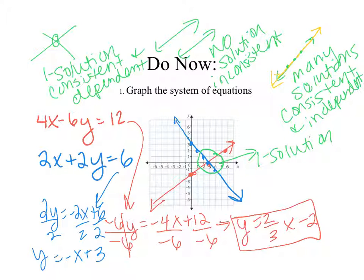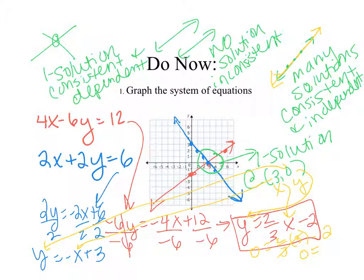And it looks like they cross at 3 comma 0. The way to confirm this is to plug in, and if both make true statements, then you can confirm yes solution. So if I go to check and I plug in 3 for x and 0 for y in both equations, I will get true statements. So 0 equals 2 thirds times 3 minus 2. So 0 does equal 2 minus 2 or 0. Check. 0 equals negative 3 plus 3, which equals 0. Check. Therefore, we found the correct solution.